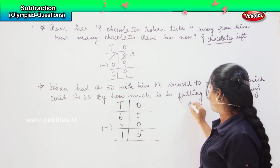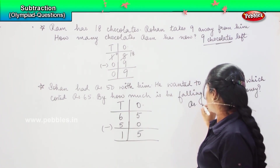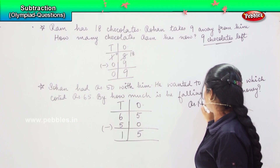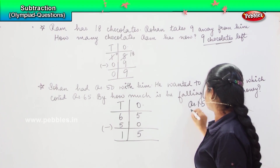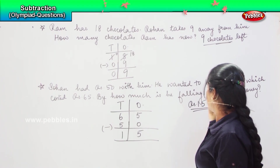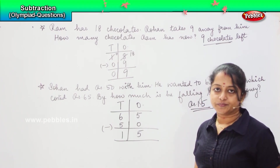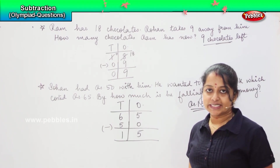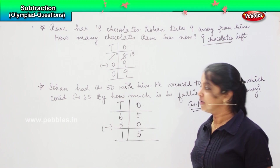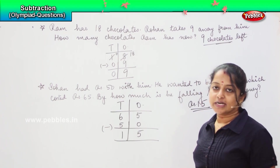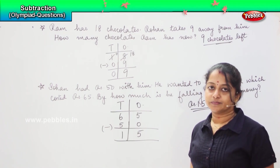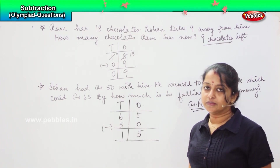So, 5 minus 0 is 5 and 6 minus 5 is 1. He needs to fetch an extra 15 rupees in order to purchase this book. Is it clear, children? Did you understand this question? Shall we proceed further?